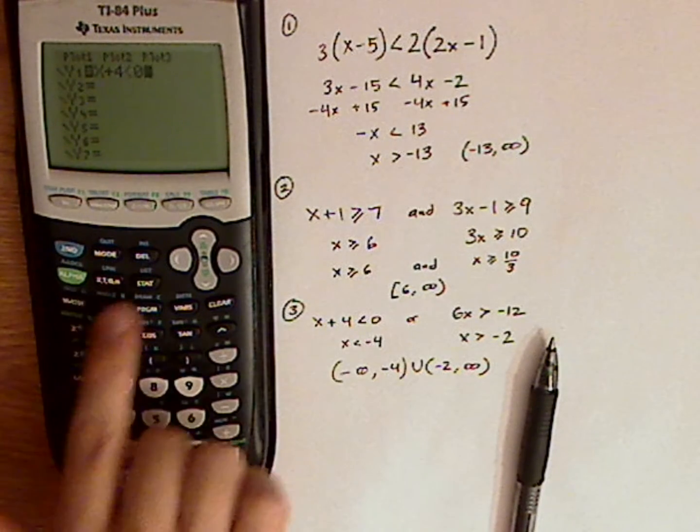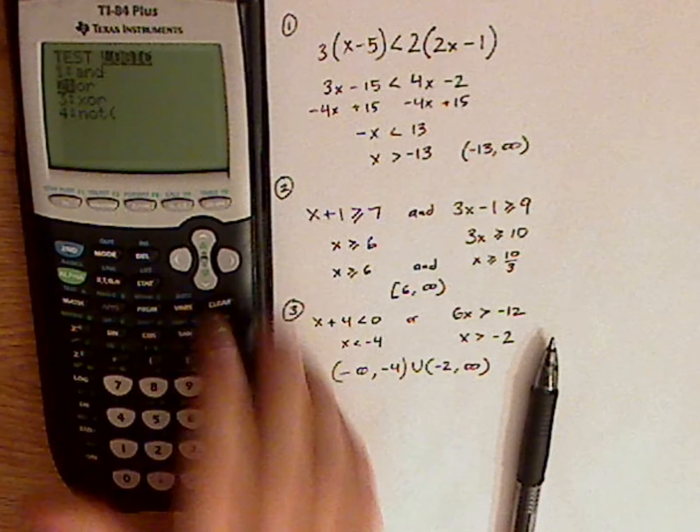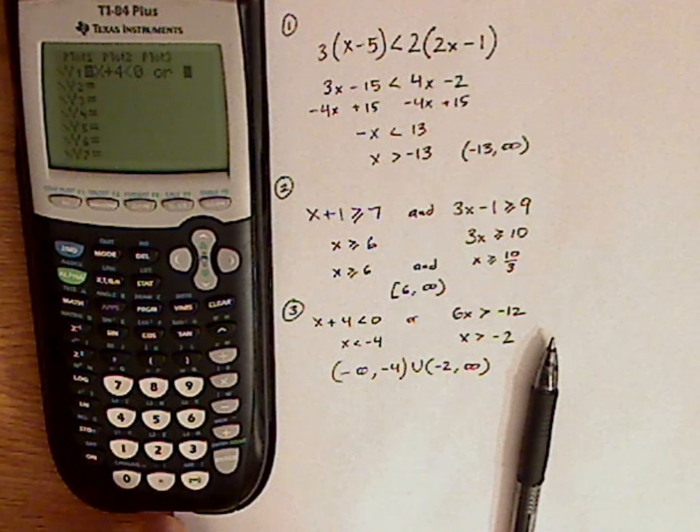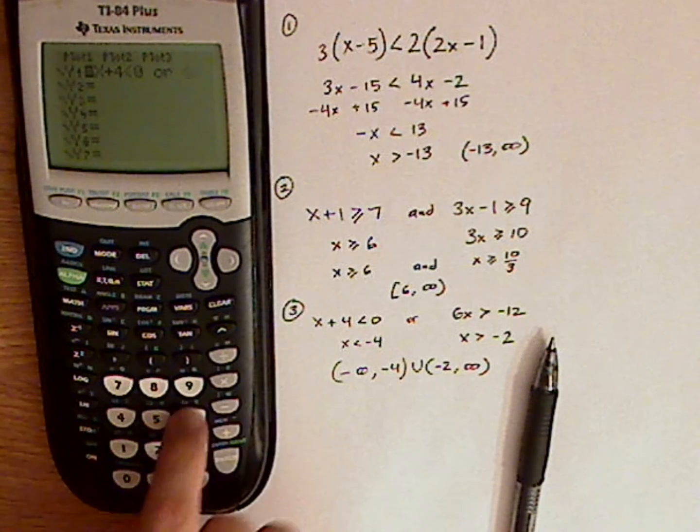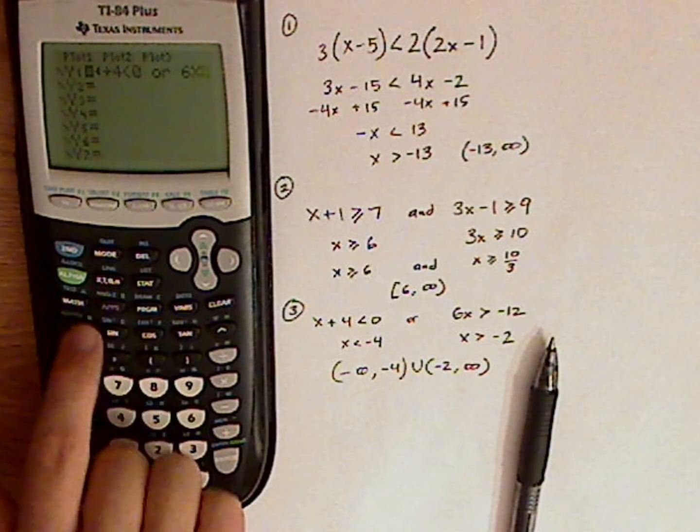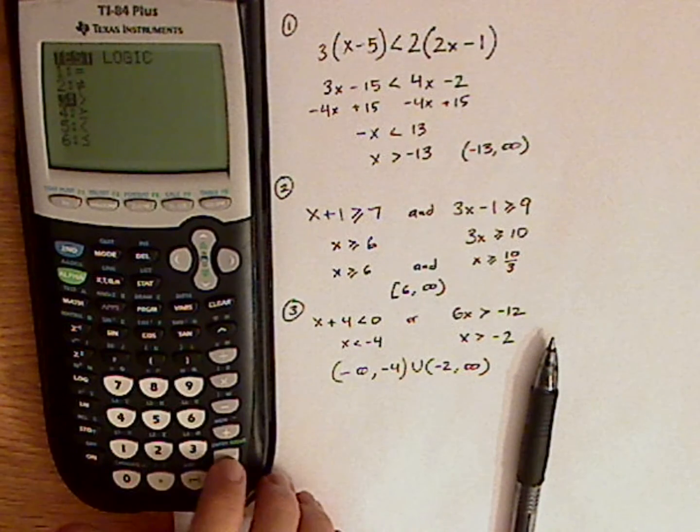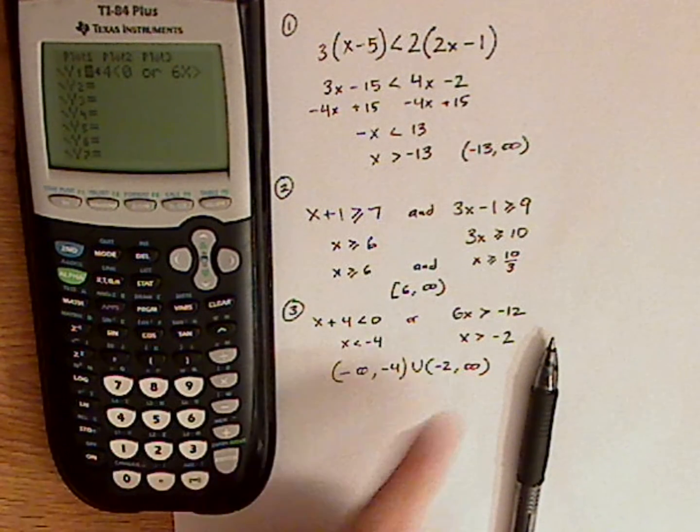Then I need the or. So, back to second, test, logic, or. And then 6, variable button for x. Second, test. Now, it's a greater than.